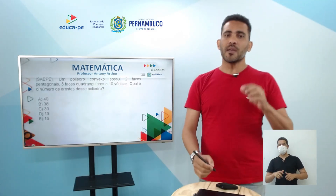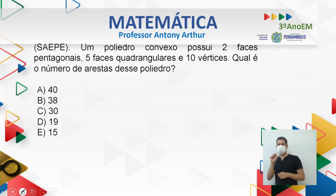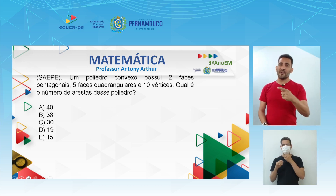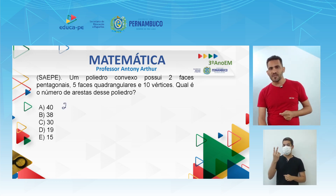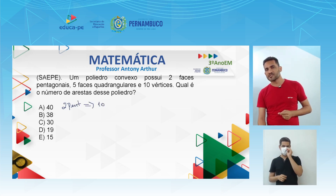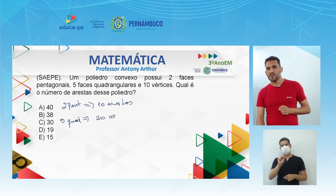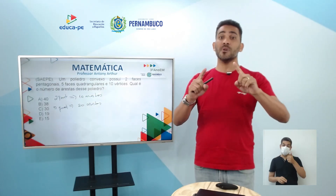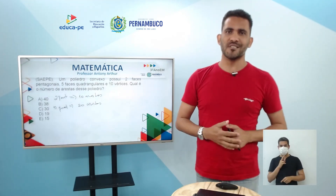Desafio: um poliedro convexo possui duas faces pentagonais, cinco faces quadrangulares e dez vértices. Qual é o número de arestas? Atenção: quando há dois tipos de faces, algumas arestas são contadas duas vezes. Duas faces pentagonais dão dez arestas; cinco faces quadrangulares dão vinte arestas. Dê um print na tela e resolva — depois a gente tira as dúvidas. Até a próxima!